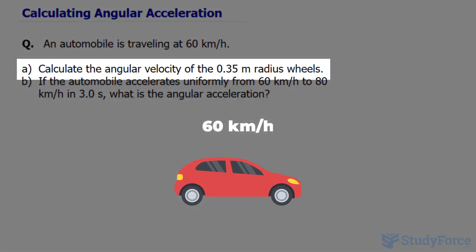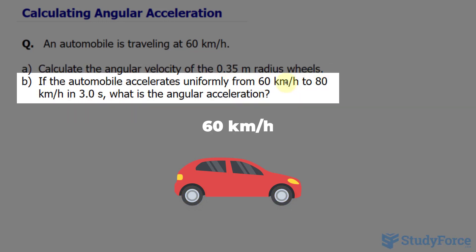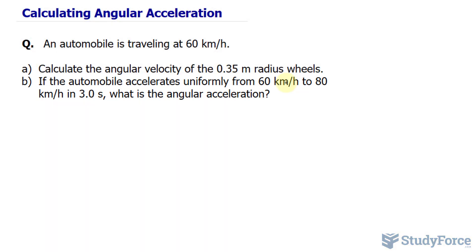First, the angular velocity of the 0.35 meter radius wheels and B, if the automobile accelerates uniformly from 60 kilometers an hour to 80 kilometers an hour in 3.0 seconds, what is the angular acceleration?